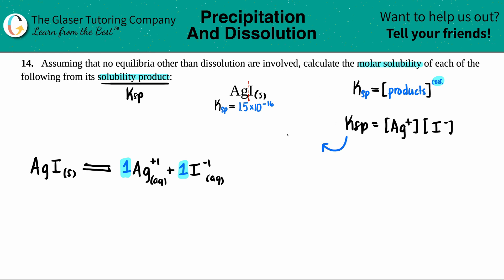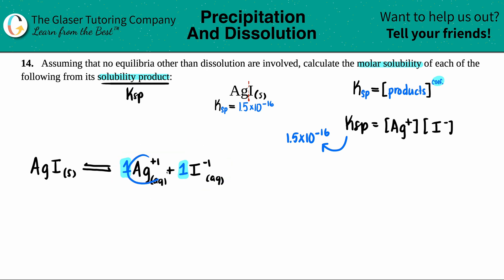We know what the KSP value is — it's 1.5 times 10 to the negative 16th — but I don't know what the concentrations of Ag⁺ and I⁻ are. That's where I'm going to use the variable. I go back to the balanced equation and I say: I don't know how much Ag⁺ I have, so I'm just going to label it as X. That's the amount at equilibrium, and it has to match the coefficient. Since the coefficient is 1, it's just X. And since it's the same, I⁻ would also be X. We'll plug these two values in for our concentrations.